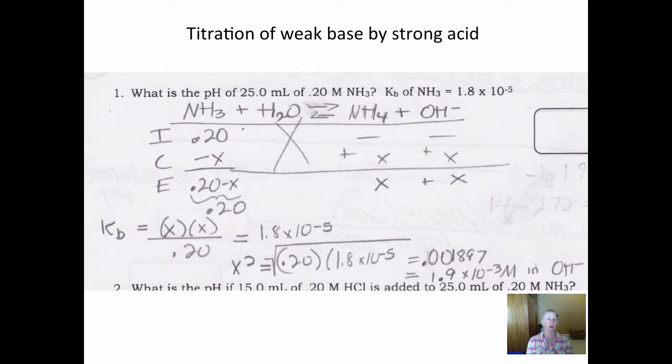Now we're going to solve for X. Clearly, X squared is going to be equal to 0.2 times 1.8 times 10 to the minus 5. And all of that needs to have the square root taken of it so we can solve for X. What's X once again? Among other things, it's the hydroxide ion concentration.